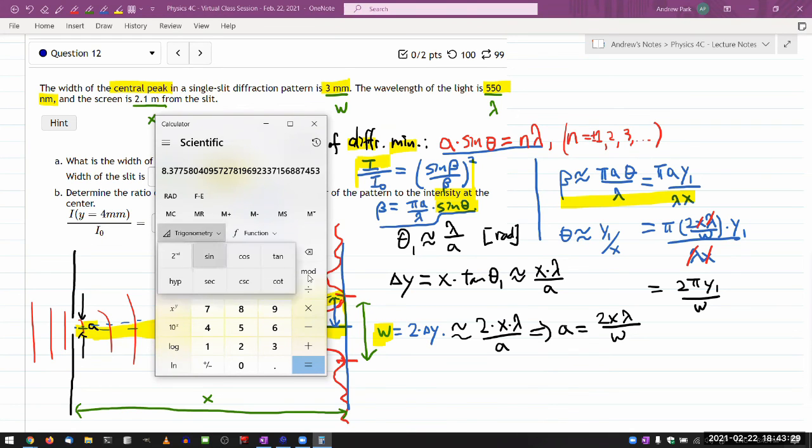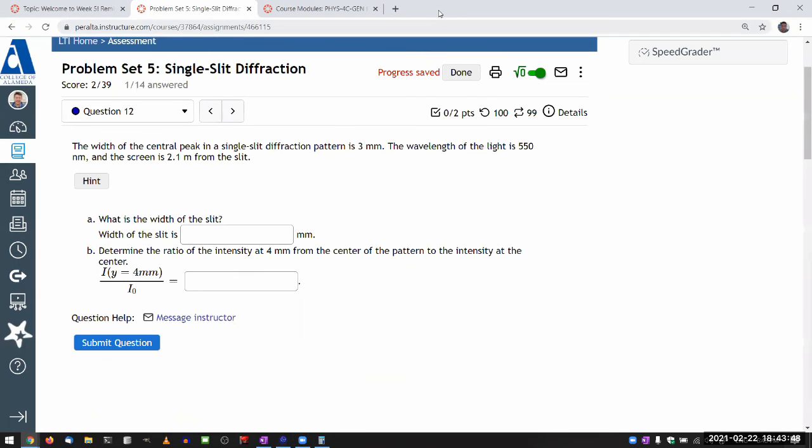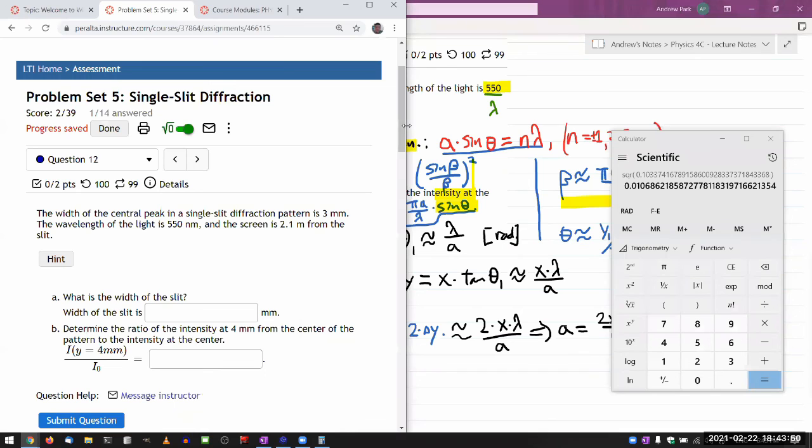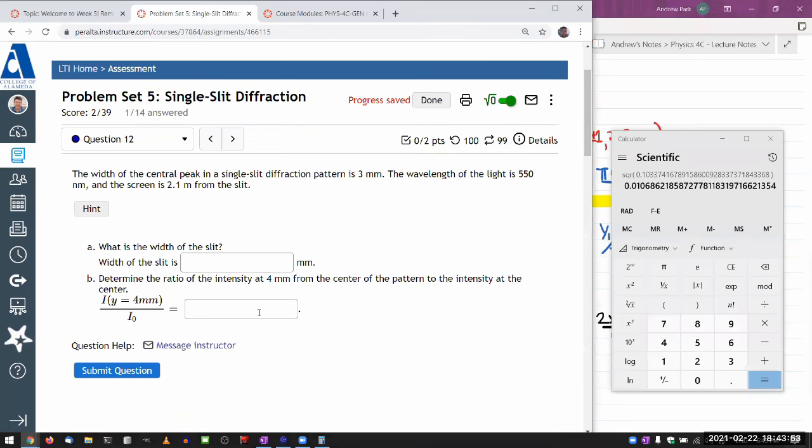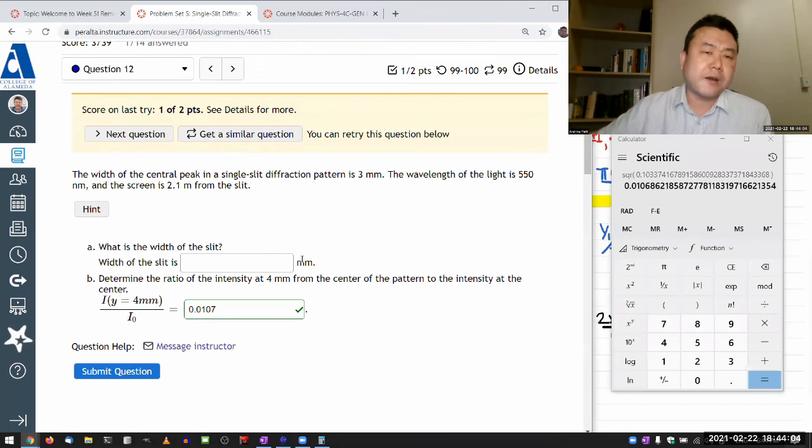So it should be sine of that number divided by the number itself, again, and then square it. So that should be the ratio of the intensities. Let me plug it in and see if I made any mistakes. I joke every time I do this that it will be embarrassing if it's wrong, and hopefully it's right. So the ratio should be 0.0107. Yeah, part B is right. And so part A was probably right, but I'll leave the part up to you to plug in the numbers there.